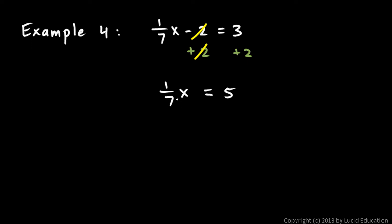Now look at this one-seventh x. How can I get rid of this one-seventh? Well, this is one-seventh times x. That's multiplication right there. So I can get rid of that with a division. But instead of dividing by one-seventh, I'm going to multiply by 7 over 1. So I multiply the left side by 7 over 1, which means I need to multiply the right side by 7 over 1 also.